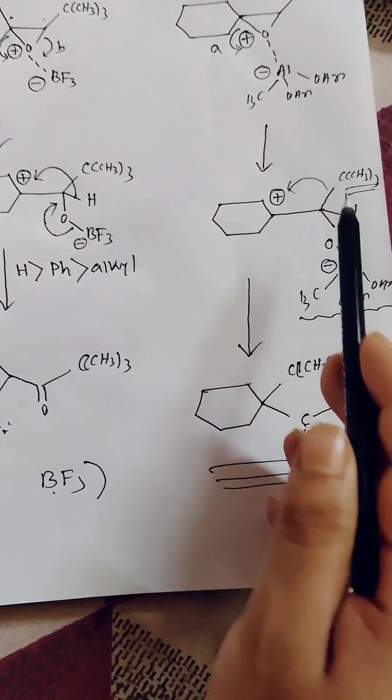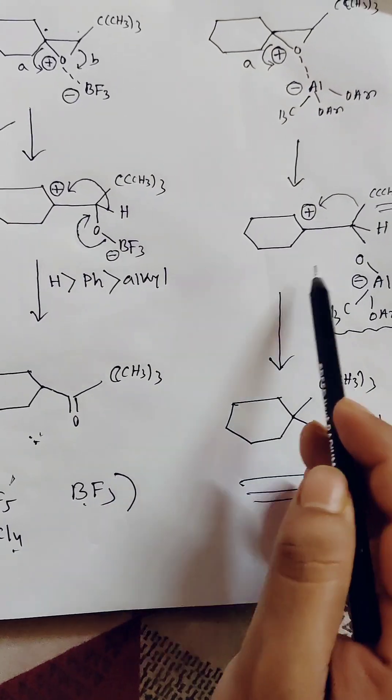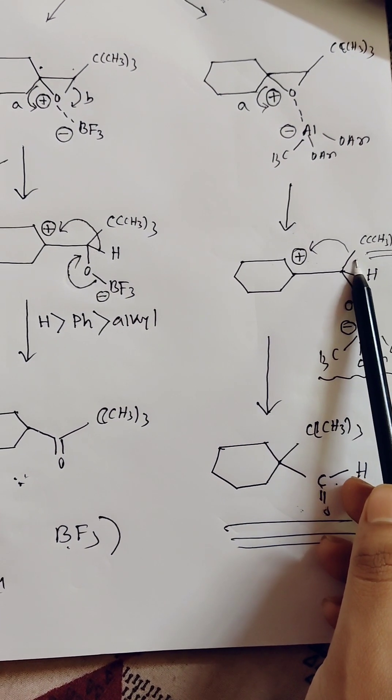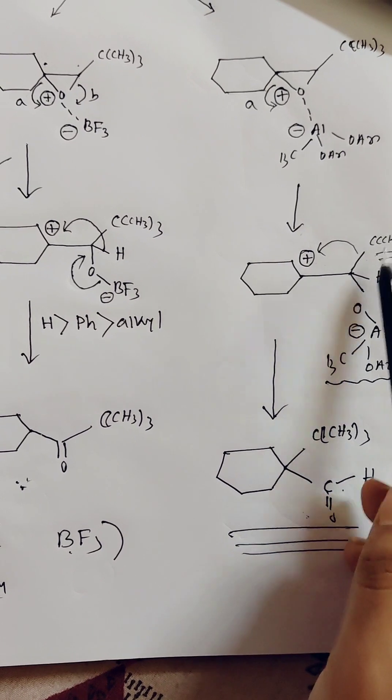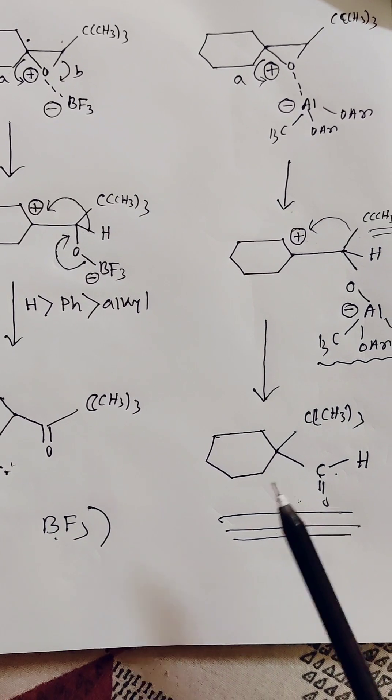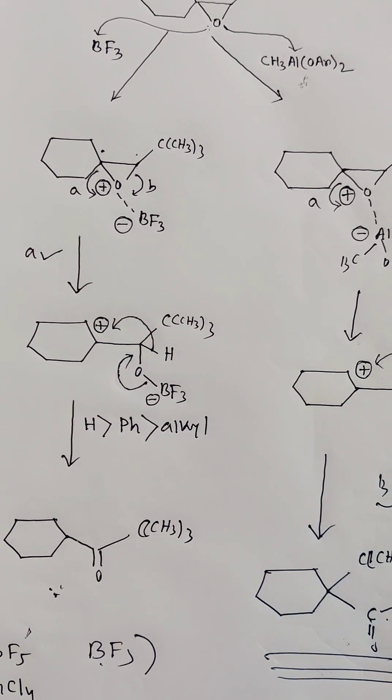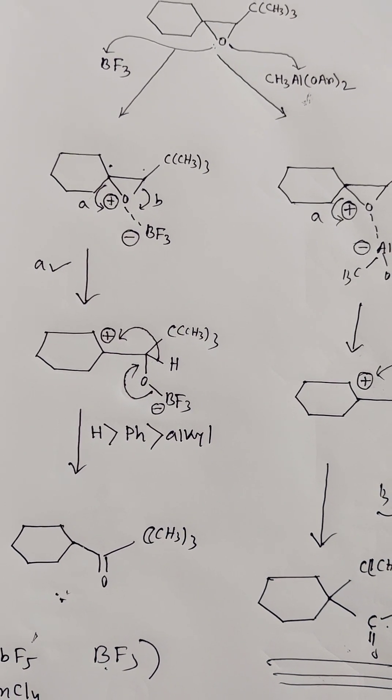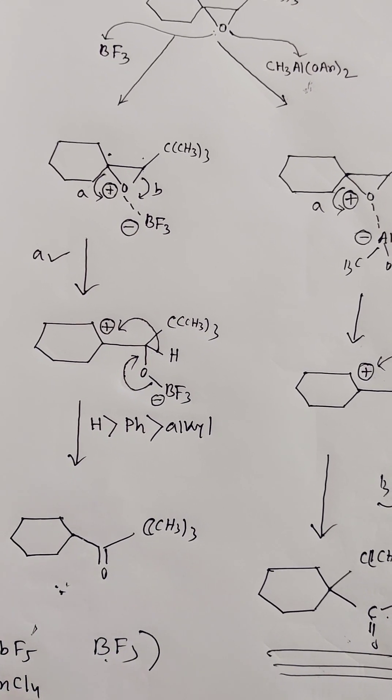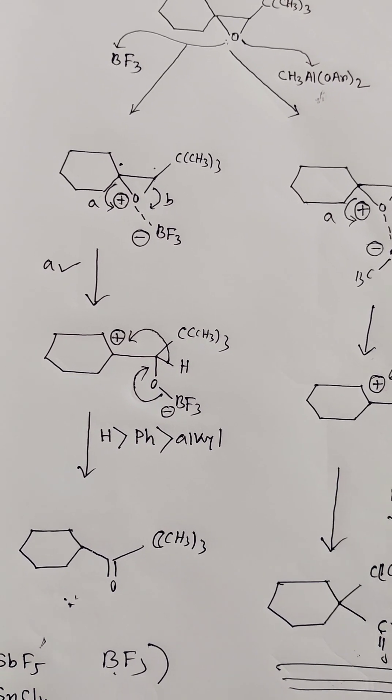But in the case of aluminium, this alkyl group will transfer selectively with 100% possibility. That's why we will get aldehyde rather than ketone in the case of this aluminium reagent with the epoxide. Epoxide ring opening is very important in chemistry nowadays. Questions will frequently be asked from this topic. Thank you.